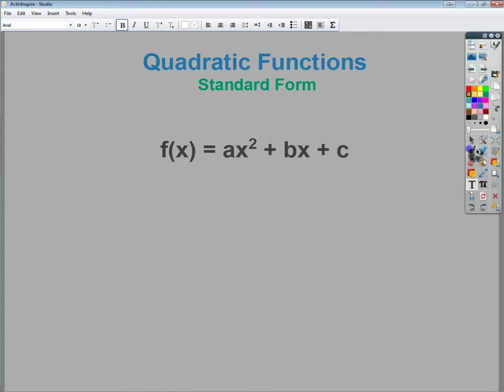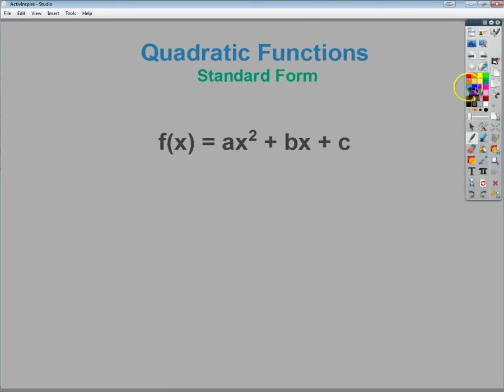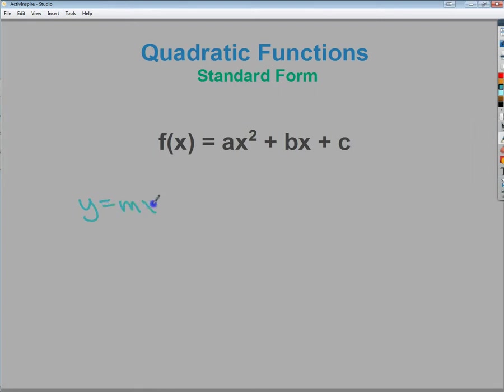Probably the last time you heard standard form is when you're working with linear equations. When you had y equals mx plus b as your slope-intercept form, it was easy to find the parts. Whereas when you had ax plus by equals c, kind of easy to graph using intercepts method, but not as functional to find all the component parts.